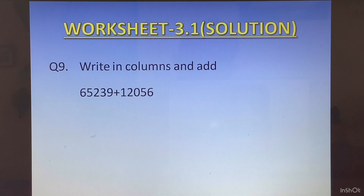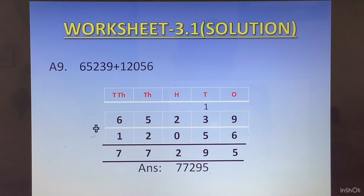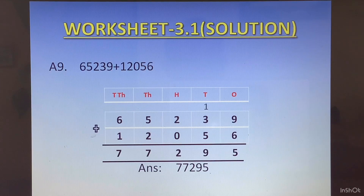Question 9: Write in columns and add. Here both were 5-digit numbers, so it was very easy to write them one below the other. I am sure you would have been able to write it. The numbers were 65239 plus 12056 and the answer is 77295.